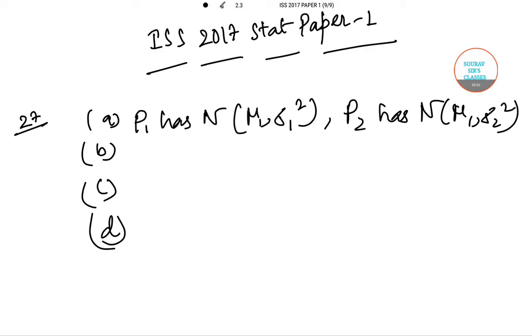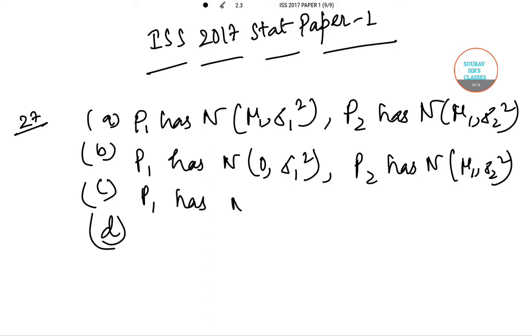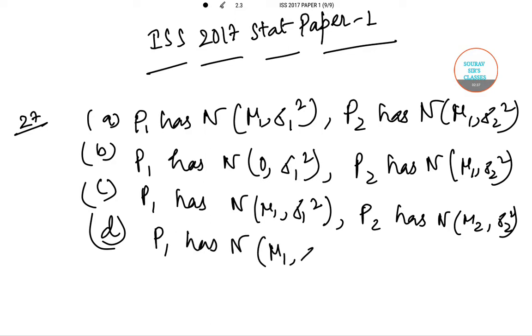Option b: P₁ has N(0, σ₁²), P₂ has N(μ₁, σ₁²). Option c: P₁ has N(μ₁, σ₁²), P₂ has N(μ₂, σ₂²). Now let us consider the case of option d.